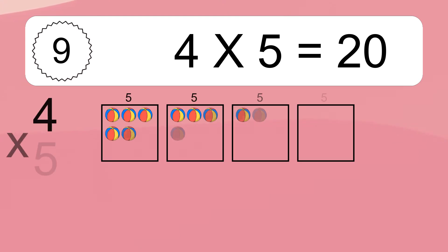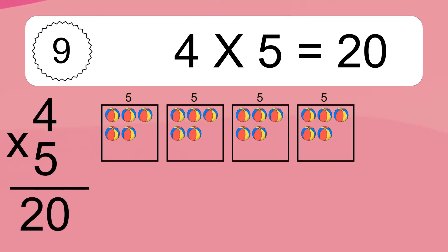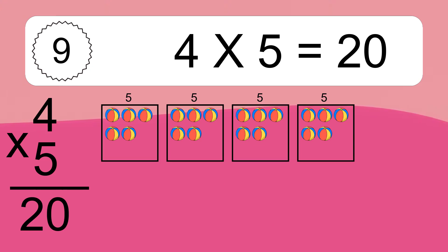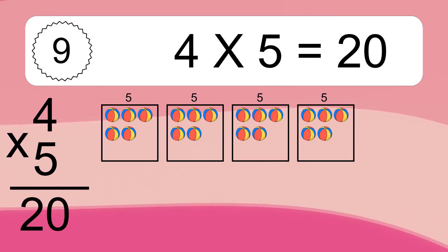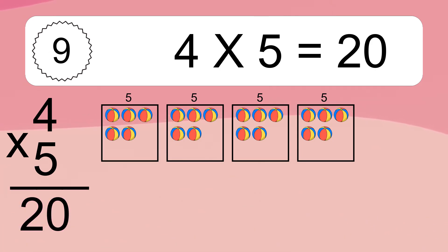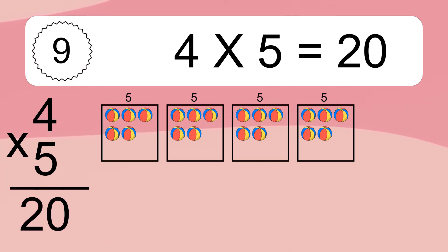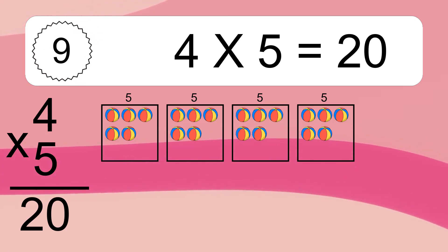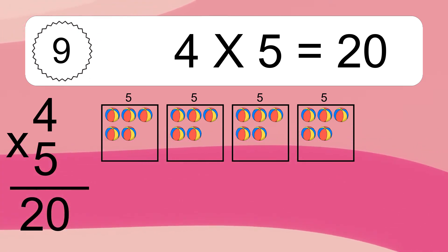4 times 5 equals what? 4 times 5 equals 20. We have 4 boxes and each box has 5 colorful balls inside. If you count all the balls in all the boxes together, you will have 4 times 5 balls. This equals 20 balls.